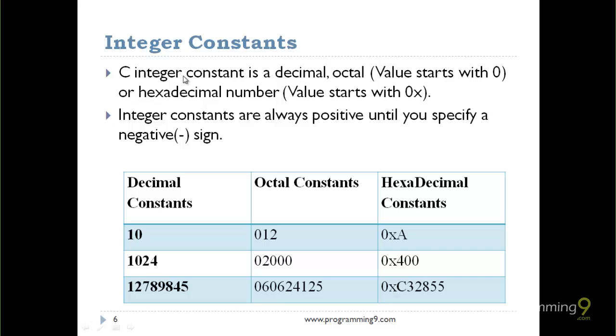An integer constant in C is a decimal, octal, or hexadecimal number. Generally, an octal number starts with 0, and a hexadecimal number starts with 0x.